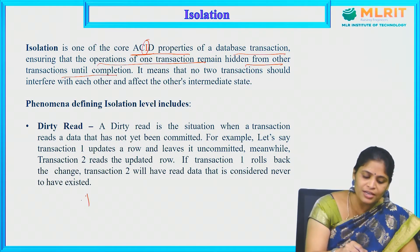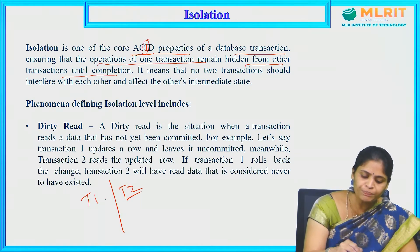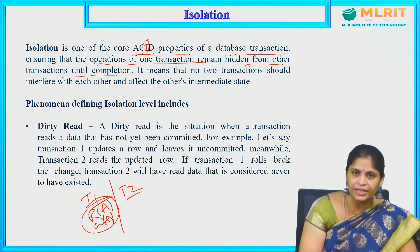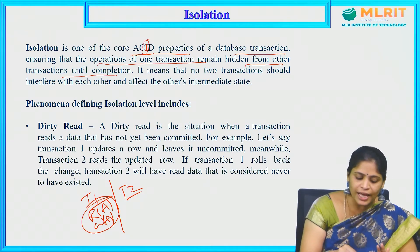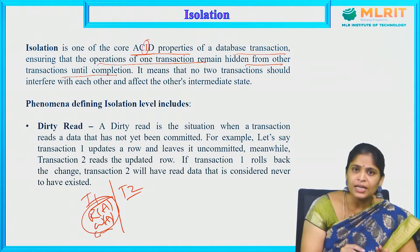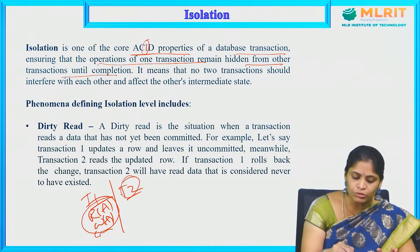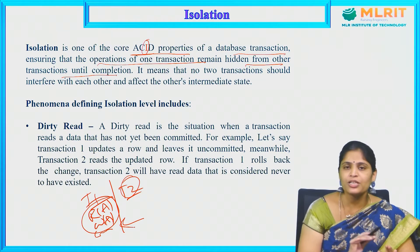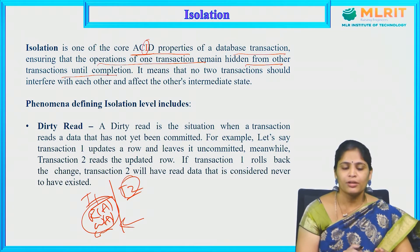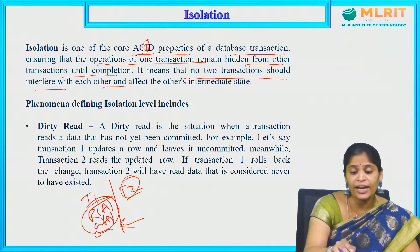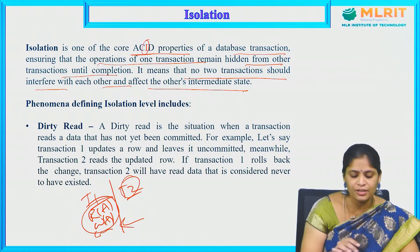We have been dealing with transactions T1 and T2. Here R of A and W of A are the two operations. These will be isolated until they have been committed — that means they will be locked. T2 will not be allowed to read or write this data. That is what we call isolation. No two transactions should interfere with each other and affect the other's intermediate state.